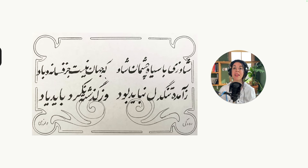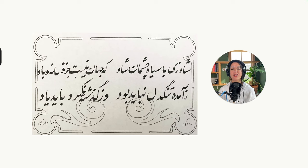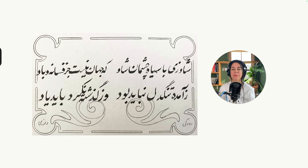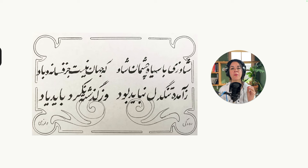Now the next line: ke jahan niest, joz fesane obad. Let's start with the word jahan, which means the world — but it could also mean the universe or this reality. The other noun in this phrase is fesane. Interestingly, this is not how we say the word in modern Persian. It means fantasy, and in modern Persian it is actually afsane. So fesane is the poetry version, and afsane is the modern spoken version.